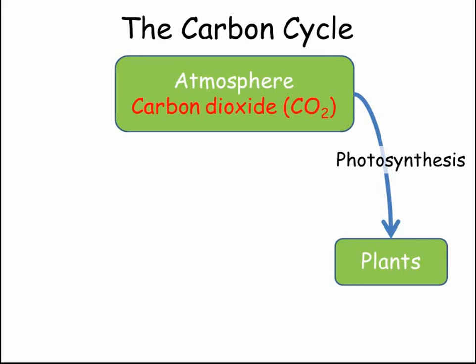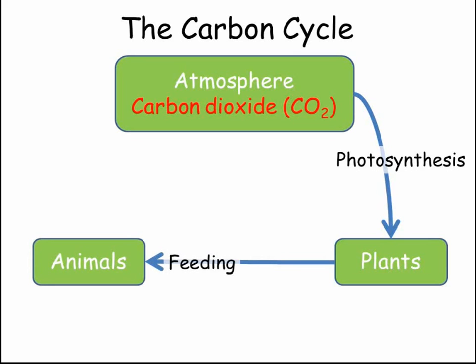When a plant is eaten, these carbon compounds pass along the food chain, first to primary consumers, then on to secondary consumers. All living things, including plants and animals, respire. This means they break down glucose, which is a carbon-based molecule, and release the energy stored within it. Respiration releases carbon dioxide back into the atmosphere.